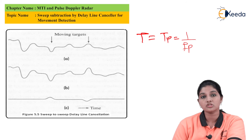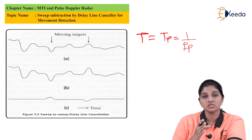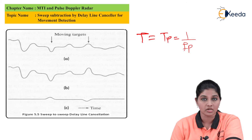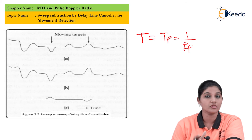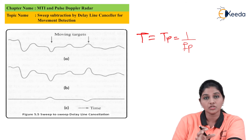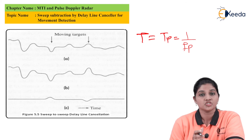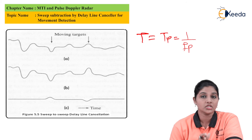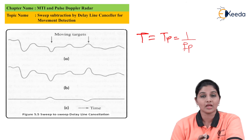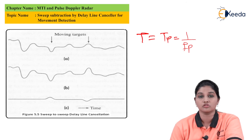In case of MTI radar, the signal obtained — that means the output of the MTI radar — is a bipolar signal which is having both positive and negative amplitude. That video signal acts as an input to the delay line canceller in digital form. The digital signal present at the input of the delay line canceller is subtracted by using the delay line canceller.